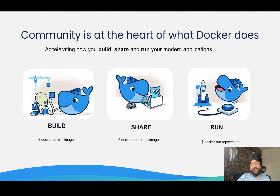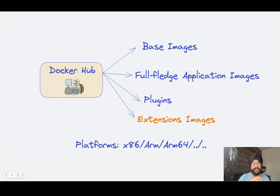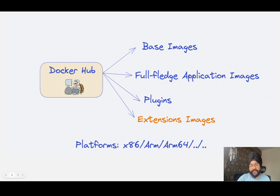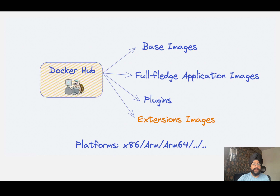As you browse through Docker Hub and click on Explore in the top navigation, you will see there are four types of images. The first is the base image, which is used to create all your container images. Your base image can be an official Docker image such as CentOS, Ubuntu, or Alpine, or you can modify an official Docker image to suit your needs. The next type is the full-fledged application image, which holds your base image as well as the project source code.